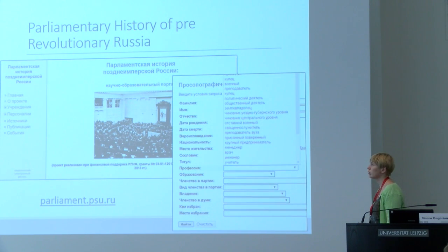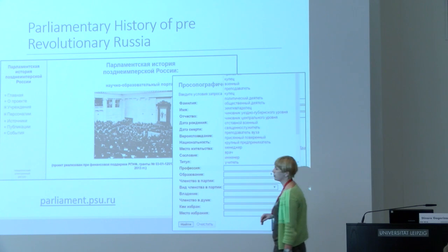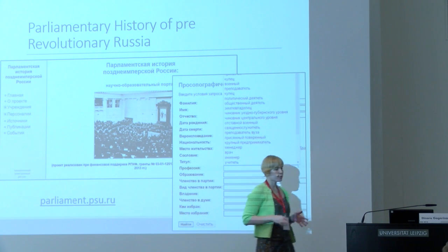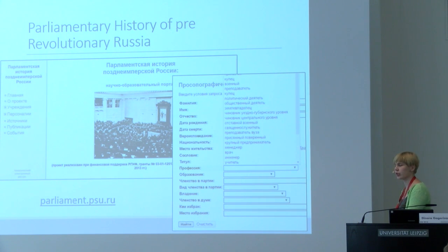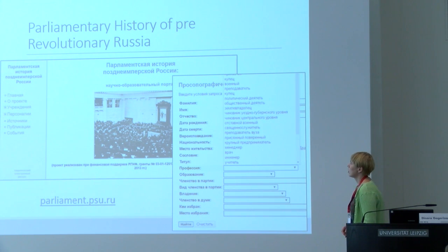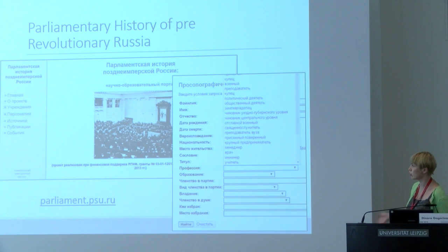The third example is 'Parliamentary History of Pre-Revolutionary Russia.' The history faculty of our university is one of the most important centers of Russian parliamentary history. Here we have a list of entities — personalities, information about every member of the pre-revolutionary State Duma and every member of the State Council — as well as events, sources, organizations, publications, and so on. This information system has some research tools; one example is a tool for prosopographical research on members of the State Duma and State Council of pre-revolutionary Russia.